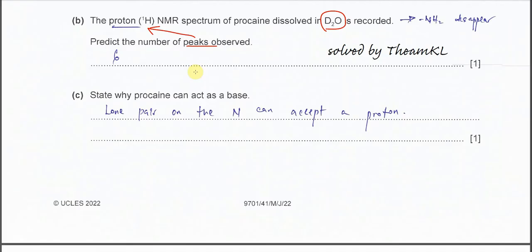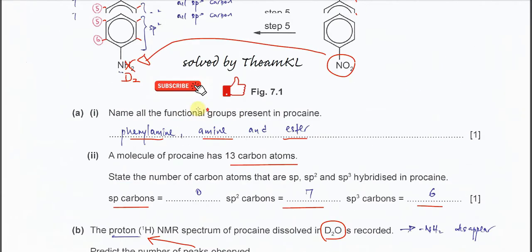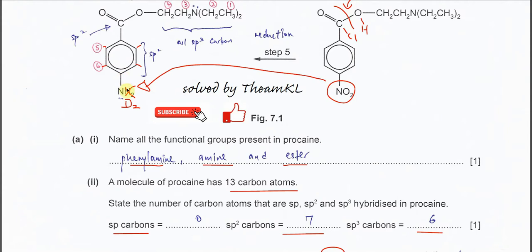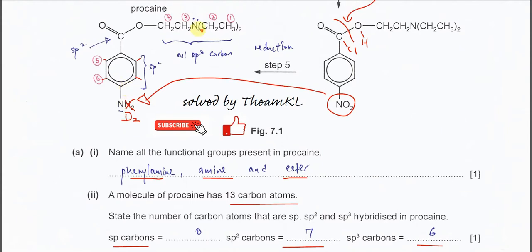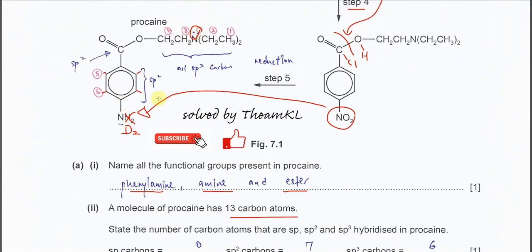Part C: state why procaine acts as a base. The lone pair on the nitrogen can accept a proton. There is a lone pair on this nitrogen and on this nitrogen also. Because it has a lone pair, it can accept protons easily — so it acts as a base.